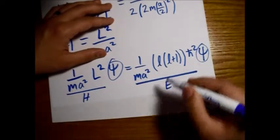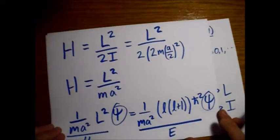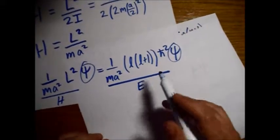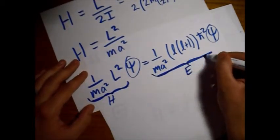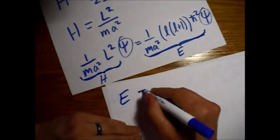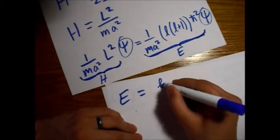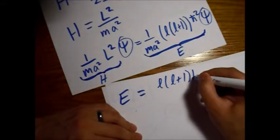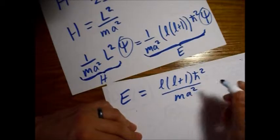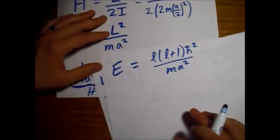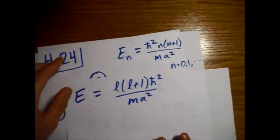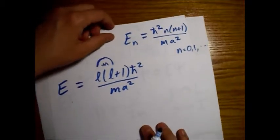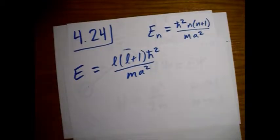And then, of course, our eigenfunction. That was just the wave function. So basically, E equals L times L plus 1, h bar squared over mA squared, which is the same thing that Griffiths has that we were asked to show right here, except he uses the letter N instead of L.